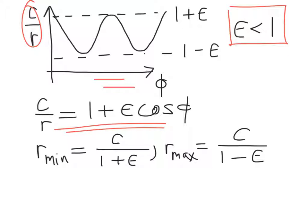When phi is 0, c over r is going to be 1 plus epsilon. So that's going to be a maximum.